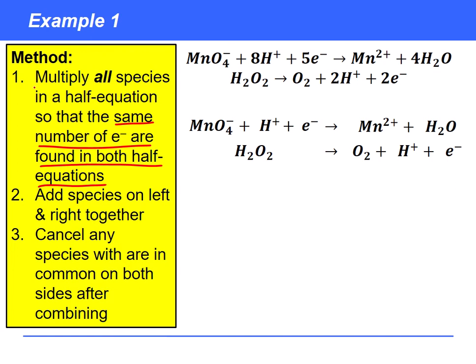So the first thing that we need to do before we combine is to multiply all species in a half equation so that the same number of electrons are found in both half equations. Now in this case the lowest common multiple of five and two is ten electrons. And so what we're going to need to do is to multiply the top equation by two and the second equation by five.